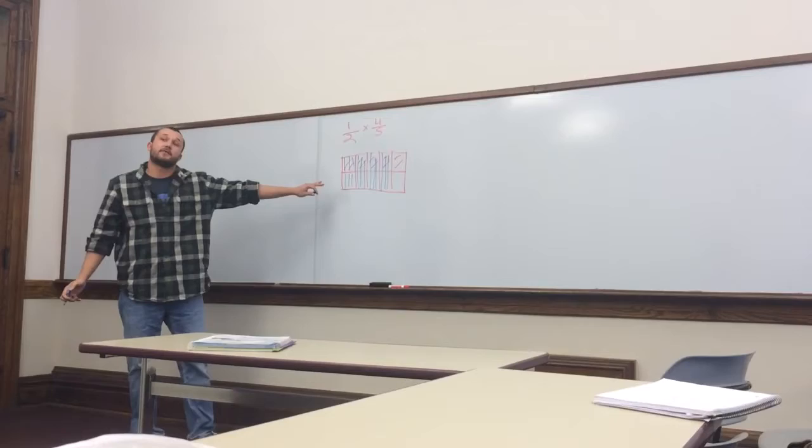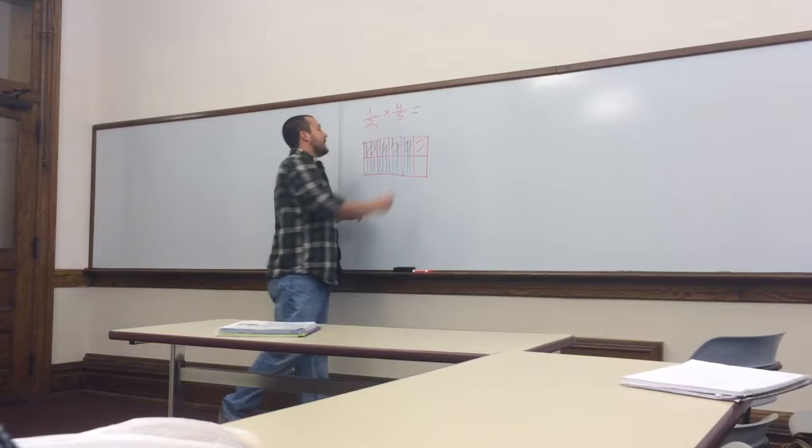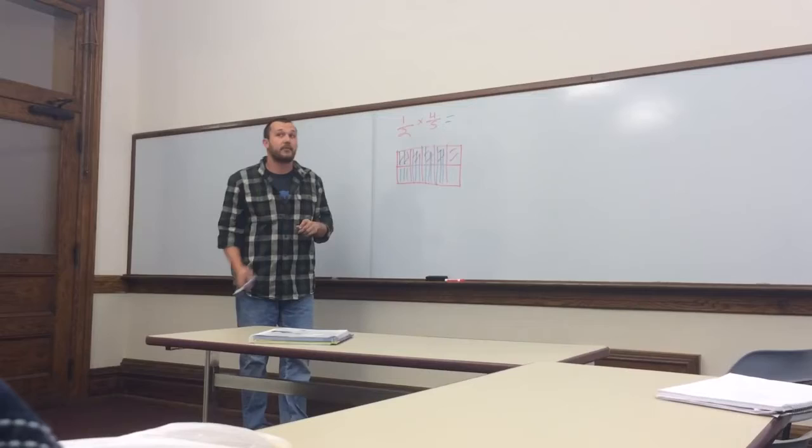Okay, that represents 4 fifths. So what we have here in our rectangle, which as a whole is equal to 1, is 1 half times 4 fifths. Now the way to get the answer is to look at our rectangle and figure out how many of these little squares are covered by both red and blue markings.